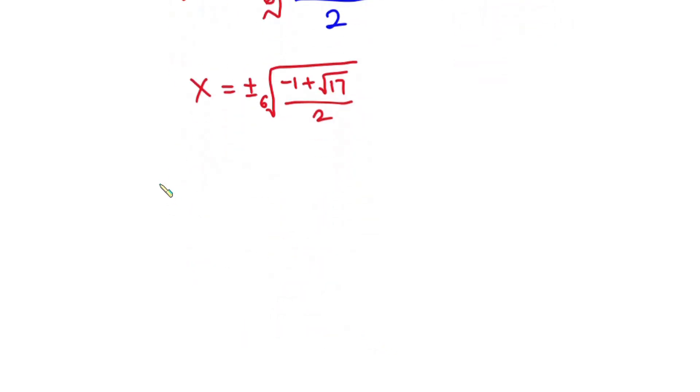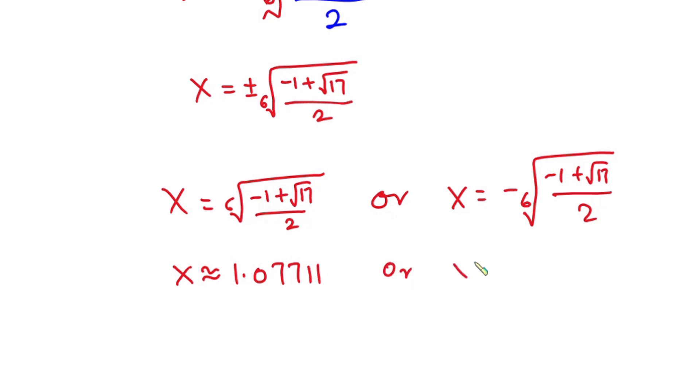So this implies that it is either x is equal to 6th root of negative 1 plus square root of 17 over 2, or x is equal to negative 6th root of negative 1 plus square root of 17 over 2. And if you type this on a calculator, we have x approximately equal to 1.07711, or x approximately equal to negative 1.07711.